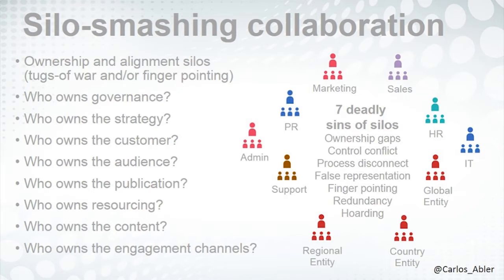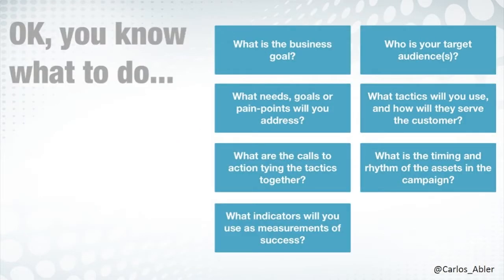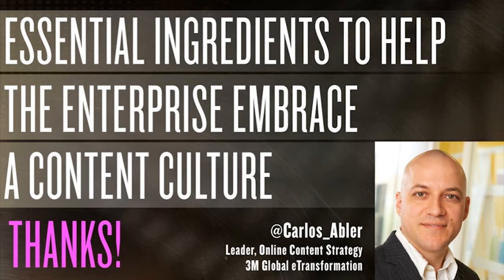We also point out the seven deadly sins of silos — anti-patterns like ownership gaps, control conflict, process disconnect, false representation, finger pointing, redundancy, and hoarding. If you can't transparently point those things out, it's really hard to isolate them and use that as a motive to get beyond them. As part of our workshops, we've created guidebooks that help facilitate people. At the end of workshops, people can answer seven key questions in teams and come out with at least straw-man campaigns to take into the later phase. That's a quick overview of the essential enablers in transforming our culture.